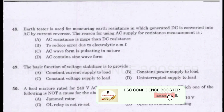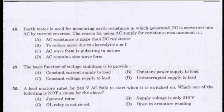Question 48. Earth tester is used for measuring earth resistance, in which the generator DC is converted into AC by a current reverser. The reason for using AC supply for resistance measurement is: Option A - AC resistance is more than DC resistance. Option B - To reduce error due to electrolytic EMF. Option C - AC waveform is pulsating in nature. Option D - AC contains sine waveform. Answer is Option B: To reduce error due to electrolytic EMF.